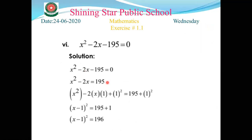Part 6, the last part: x² - 2x - 195 = 0. Before explaining, all students take a moment — how many steps are there and which ones do you need to do? Try to recall the seven steps yourself.